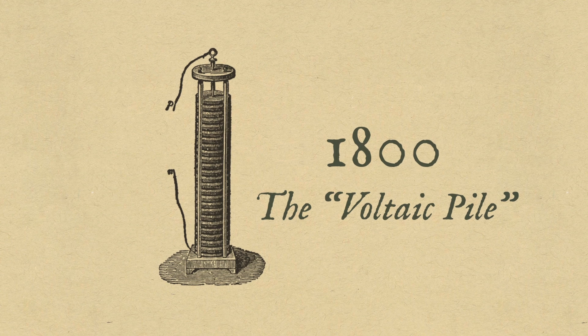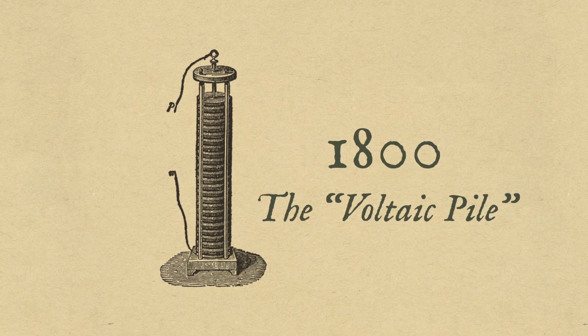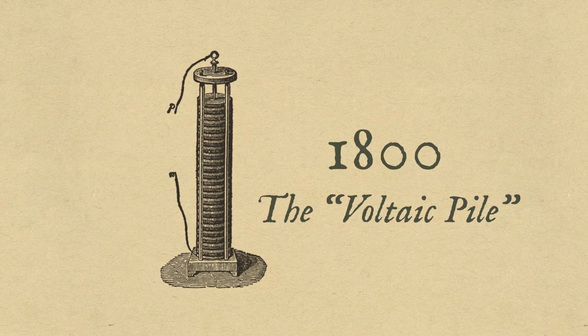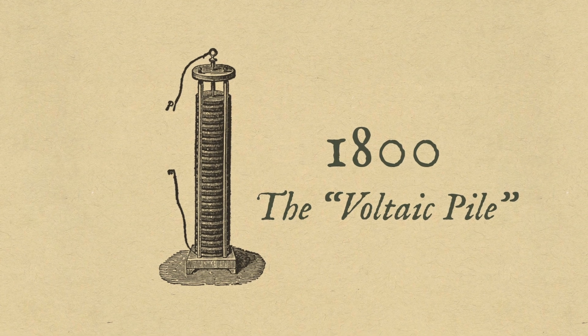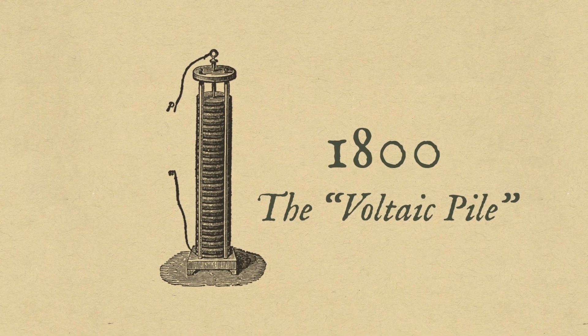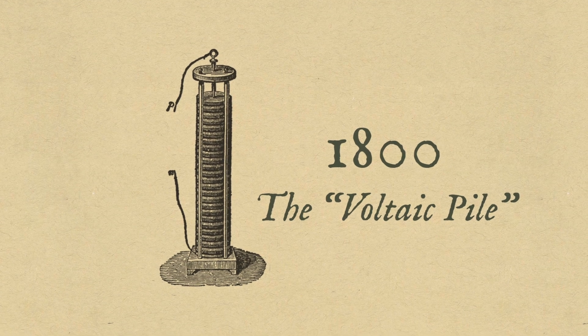This first battery consisted of stacks of zinc and copper plates separated by cloth soaked in salty water, or brine. Over the next 200 years, scientists and researchers would create new chemistries and methods for producing more reliable power from batteries.